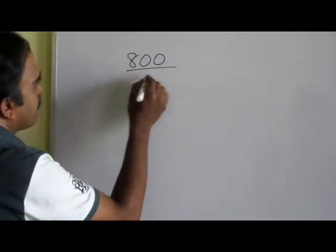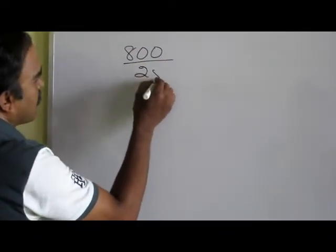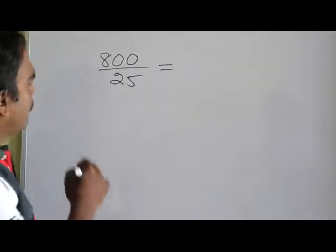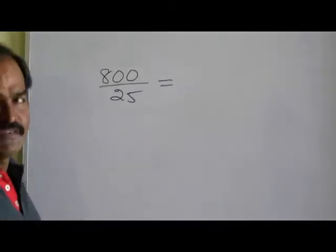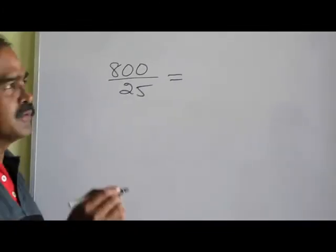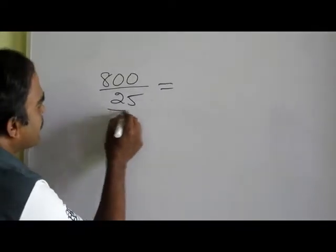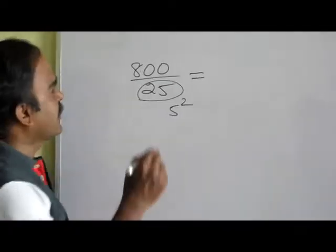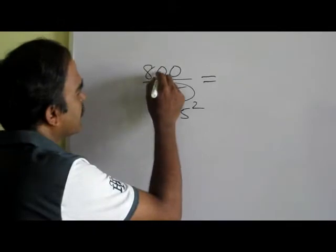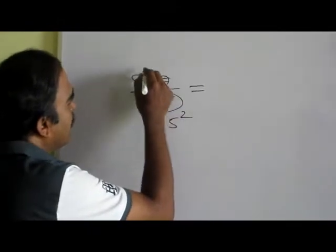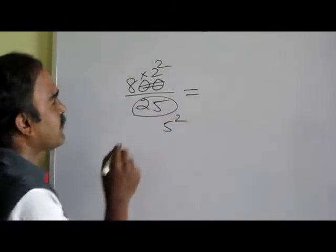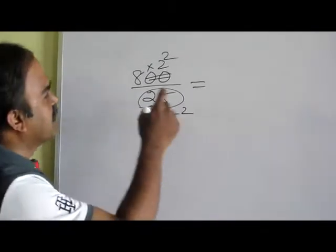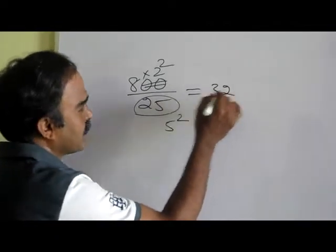Let us go for one more example: 800 divided by 25. How to do this using shortcuts? 25 is nothing but 5 squared. So 8 times 2 squared — that is 8 times 4 — is 32.